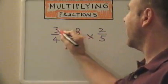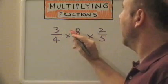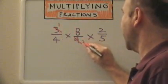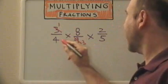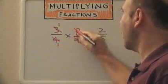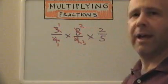We can cross-cancel our three and our nine. Three goes into itself once. Three goes into nine three times. We could also cross-cancel our four and our eight. Four goes into itself once. Four goes into eight two times.